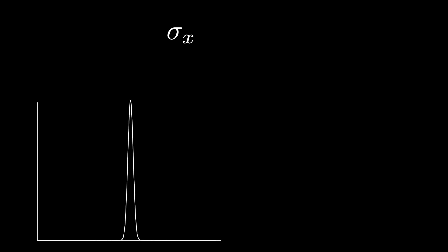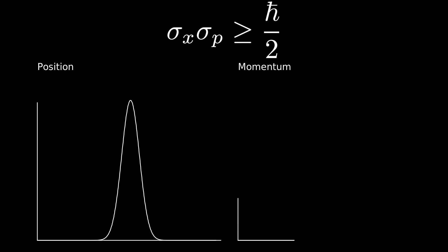The Heisenberg uncertainty principle simply states that our knowledge of the location of our quantum particle in position space is inversely proportional to our knowledge in momentum space. That is to say, as the distribution in position space grows, the distribution in momentum space shrinks.